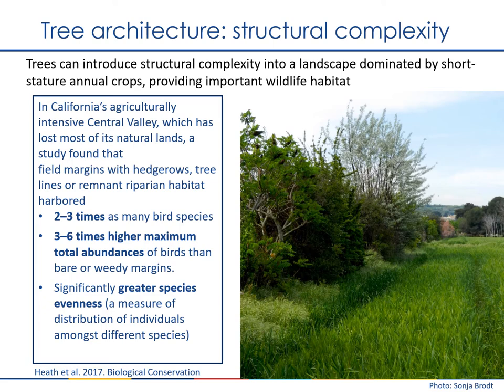The structural complexity that trees bring to a cropping system can provide important wildlife habitat. This has been shown in California's Central Valley, where studies have shown that when field margins have hedgerows, tree lines, or some remnant riparian habitat, they harbor 2 to 3 times as many bird species as field margins kept bare or covered with a typical mix of weeds. They also have 3 to 6 times higher total abundance of birds — native songbirds that utilize resources within the hedgerow — and significantly greater species evenness, meaning every species is well represented by similar numbers of individuals.